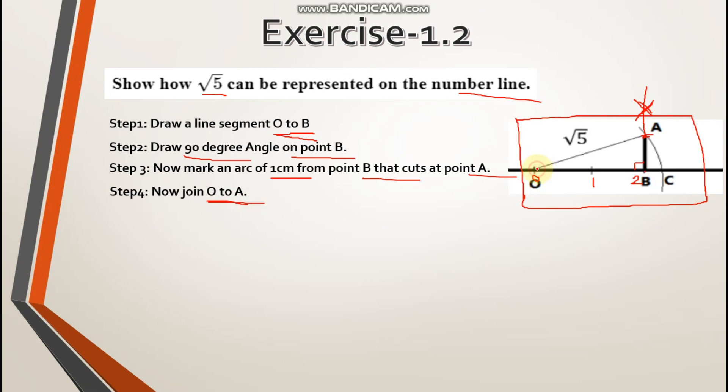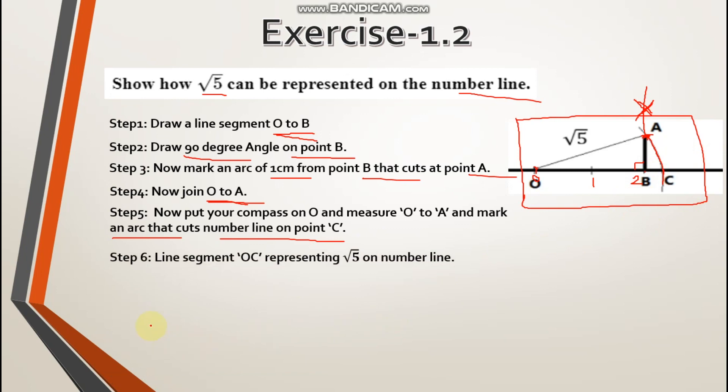Now put your compass on O and measure O to A, and mark an arc that cuts number line on point C. You have to place your compass at O. Put your compass at O. Now measure O to A. Place the needle at O and the pencil will come to A. Now from O, you will draw an arc. You need to mark an arc on your number line, wherever the arc cuts your number line, mark that point as C.